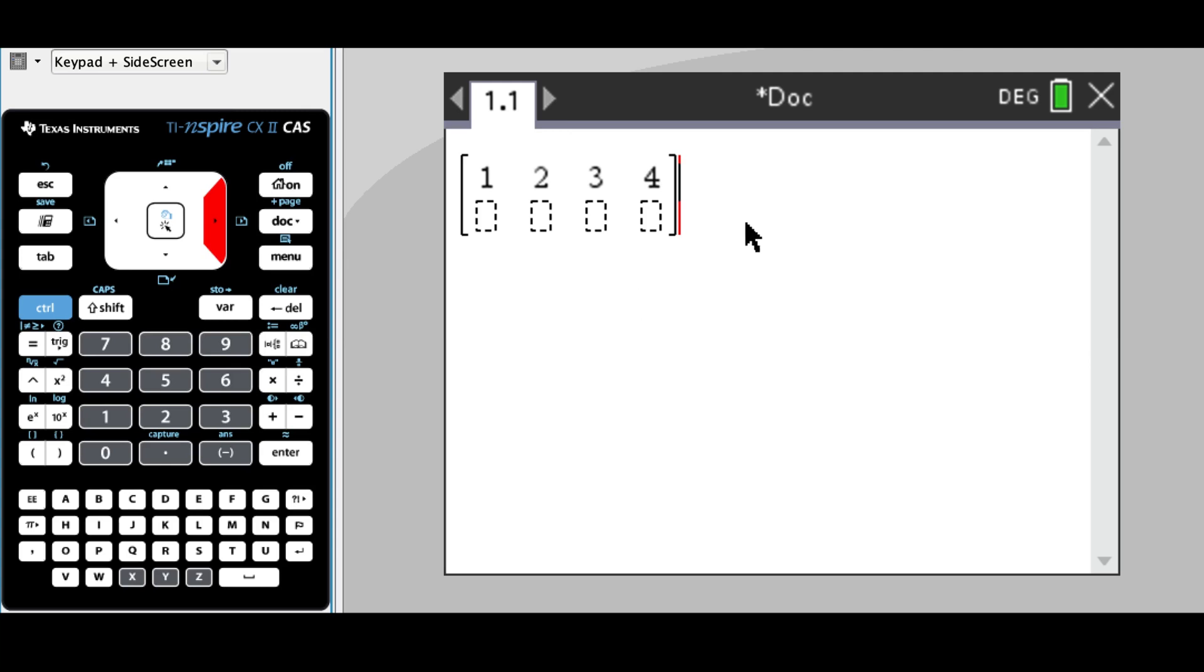If we use the right arrow from here, what happens is it'll take us outside of the matrix and then the numbers that we enter will be outside of the matrix.